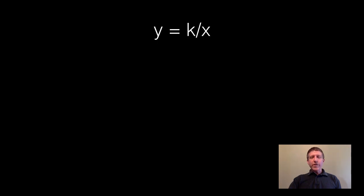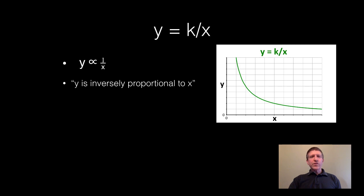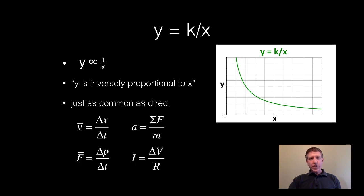This relationship is also very common: y equals k over x. When you say this, you simply say y is inversely proportional to x, which means the same thing as y is proportional to 1 over x. It is just as common as direct. You can write many direct relationships as an inverse relationship. Here are some examples.